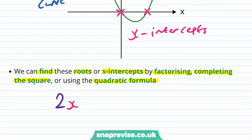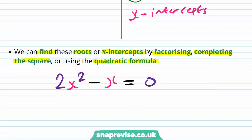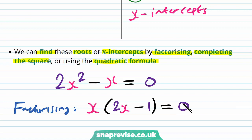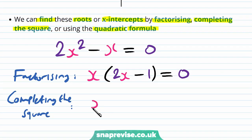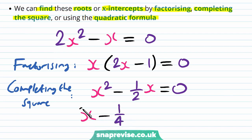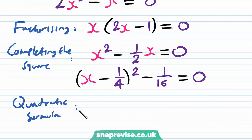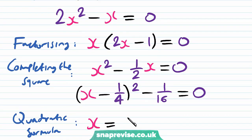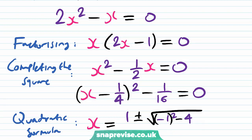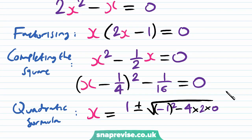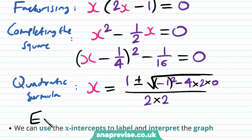To solve 2x² - x = 0, we can factorise: x(2x - 1) = 0. Or we can complete the square — dividing by 2 gives x² - ½x = 0, so (x - ¼)² - 1/16 = 0. Finally, using the quadratic formula gives x = (1 ± √(1 - 4·2·0)) / (2·2) since c = 0. Each method gives the solutions x = 0 or x = ½.